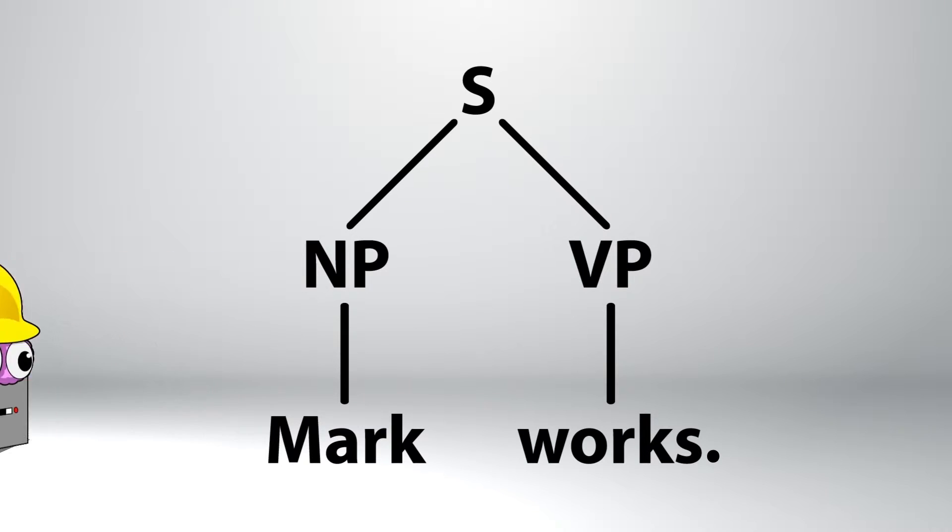We put sentences up on the rack to see if they're put together right. When it's up on the rack like this, you can see that the sentence has a noun phrase, that's the NP, and the verb phrase, that's the VP. Most of the sentences you write have a noun phrase and a verb phrase.